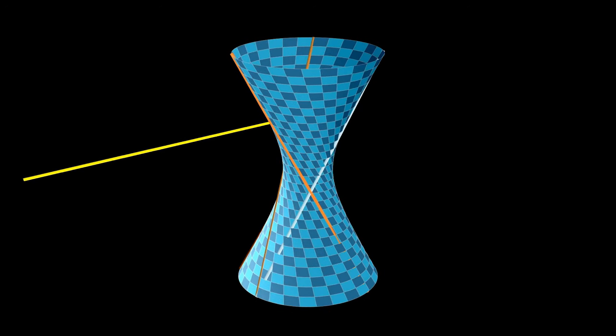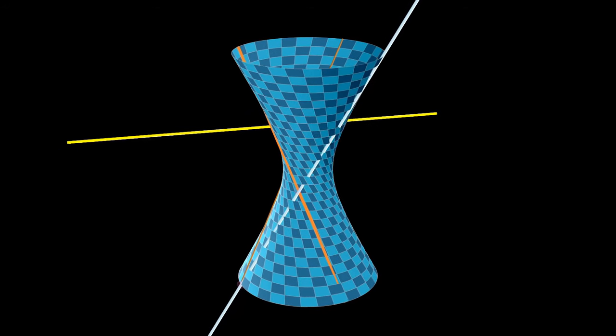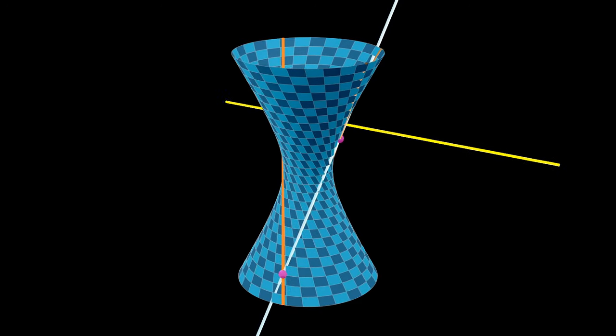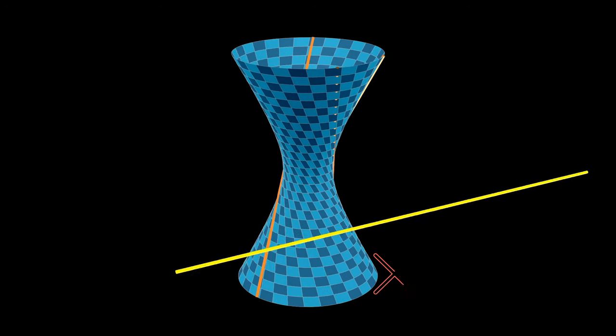And because of this, if the fourth line does not intersect the hyperboloid at all, we know there are actually no lines that go through all four of the given lines.